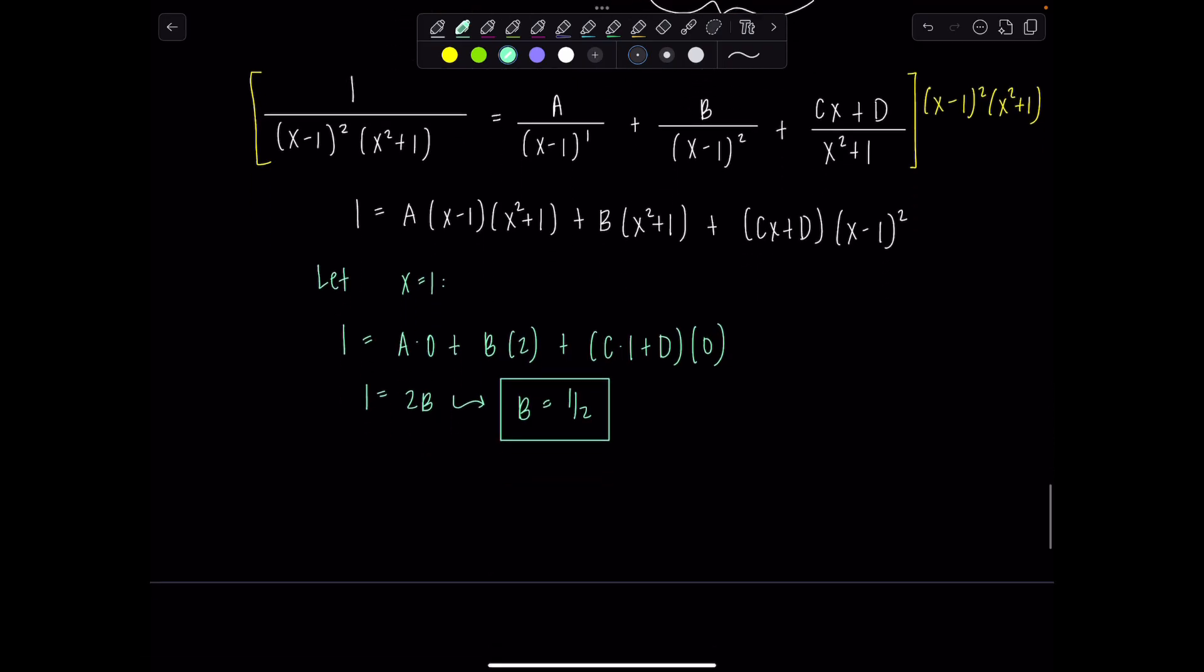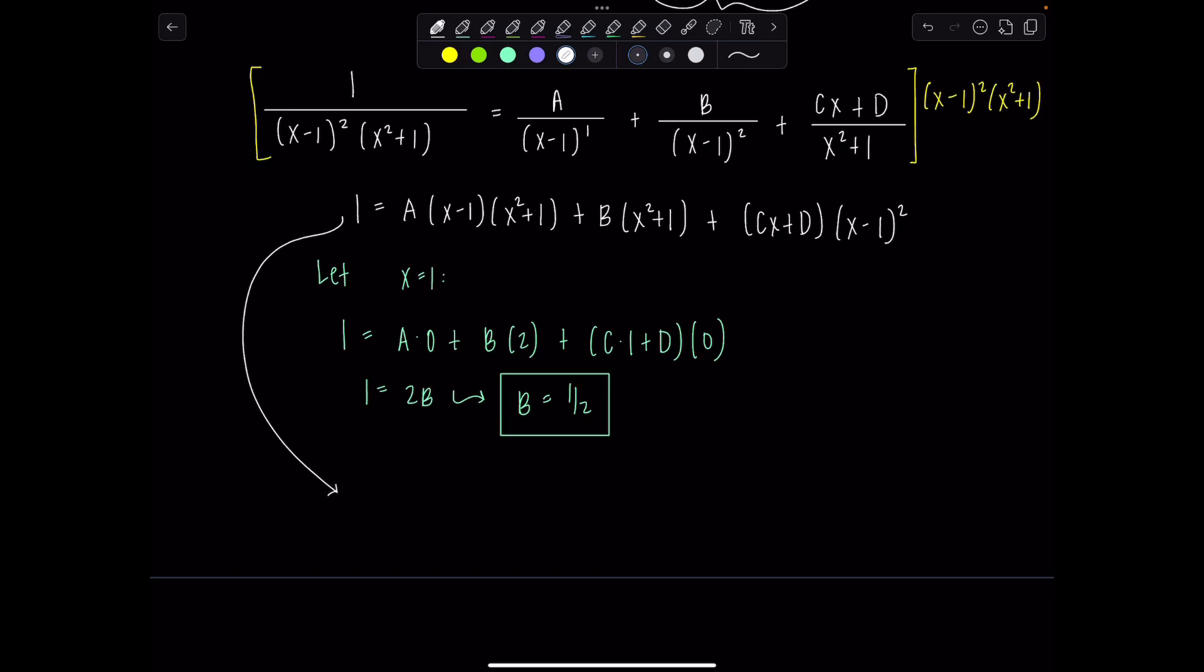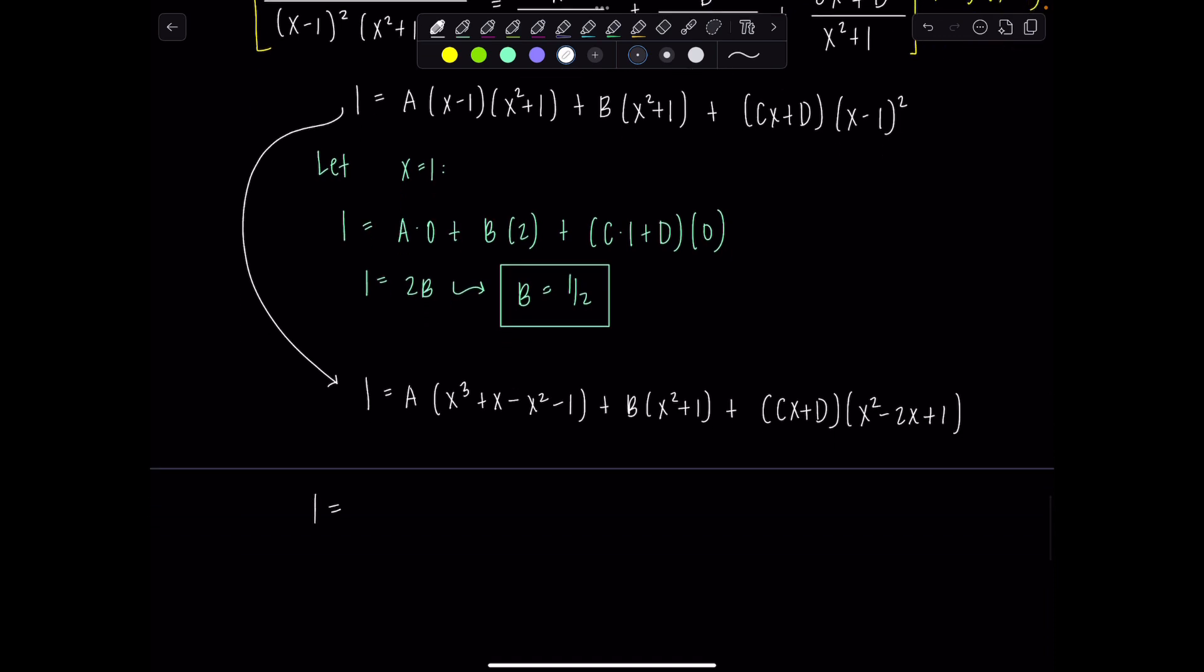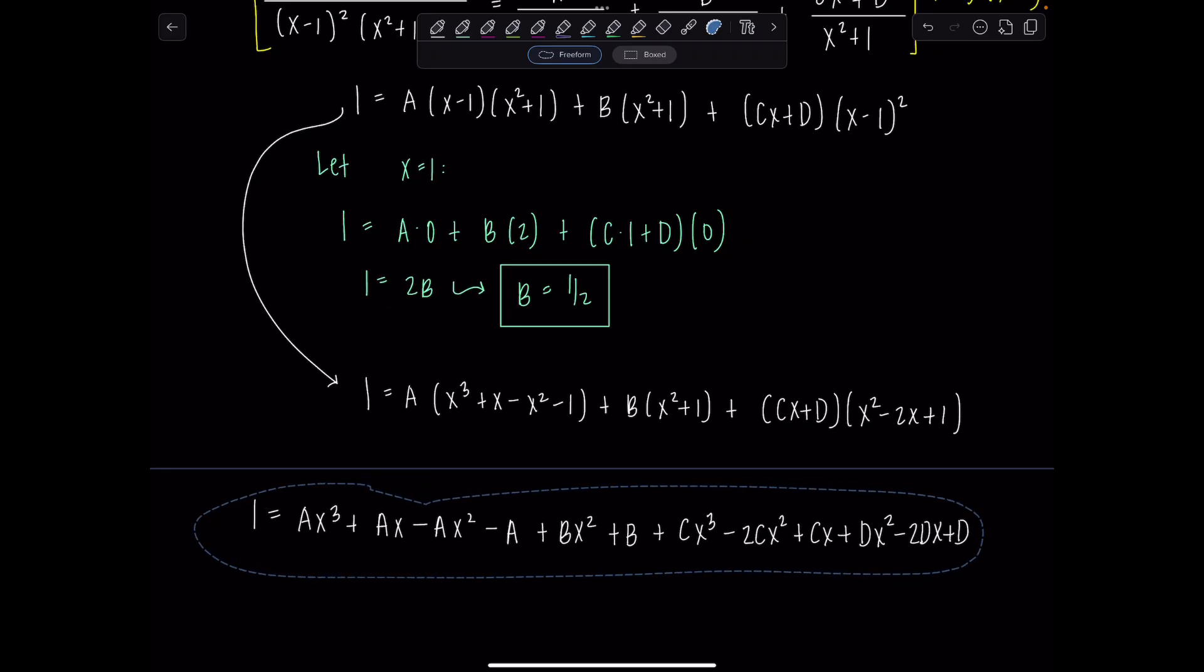I'm just going to multiply everything out at this step. Let's concentrate. So 1 equals a times, this is going to be x cubed plus x minus x squared minus 1 plus b times (x squared plus 1), I'll distribute it later when I do the rest, plus this is going to be (cx plus d) times (x squared minus 2x plus 1). And then now I have 1 equals ax cubed plus ax minus ax squared minus a plus bx squared plus b plus cx cubed minus 2cx squared plus cx plus dx squared minus 2dx plus d. We almost ran out of space.